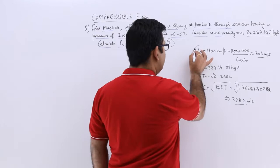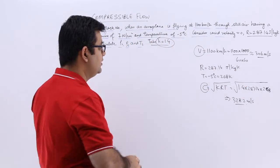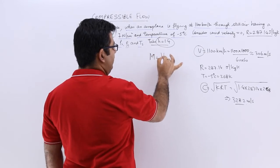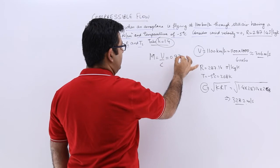Now you have velocity in meters per second and you have the velocity of sound in meters per second. This can give you Mach number which is the velocity upon the speed of sound which is 0.931.